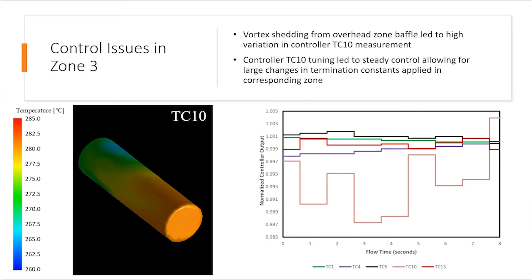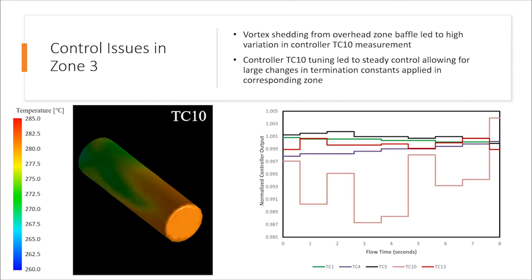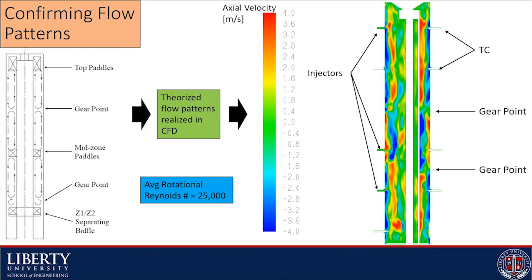The control technique proved effective. Yet, when plotting the normalized controller output, we noticed a much larger fluctuation was being seen at TC10 compared to the other controllers. We decided to create an animation of the temperature reading across the thermocouple tip so that we could understand the reasoning behind this. The animation shown depicts a 25 degrees C gradient across the thermocouple. This is due to the vortex shedding events taking place at the zone 2-3 separating baffle which is just slightly upstream of TC10. Even with the larger temperature gradient, TC10 showed that it was successful in controlling the zone and that the 60-point moving average temperature was able to report a reliable value for the controller to base input actions upon.